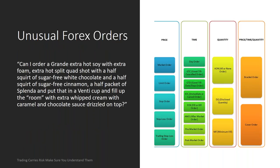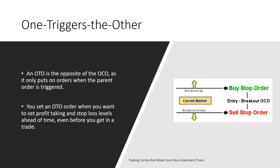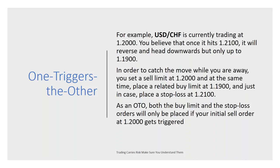In the Forex market, you can pick and choose any type of order you want. We have one-cancels-the-other and one-triggers-the-other. One triggers the other is a great one — for example, if the Swiss franc is currently trading at 120 and you believe that once it hits 121 it will reverse and head downward to 119, you can set a sell order at 120 and at the same time place a related buy order at 119. One will trigger the other — when one happens, the other happens. So you get to trade off that resistance level and off that support level, and you get both trades in.